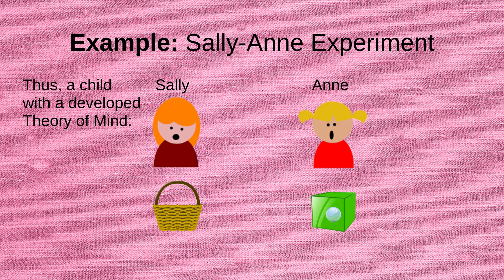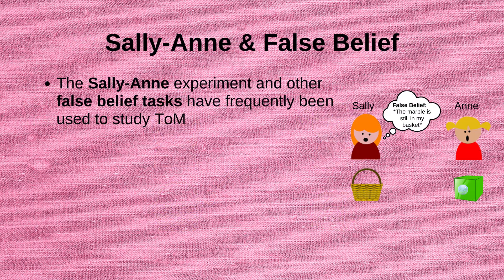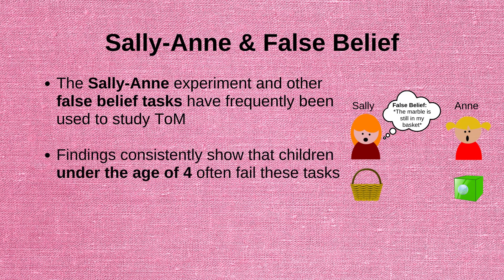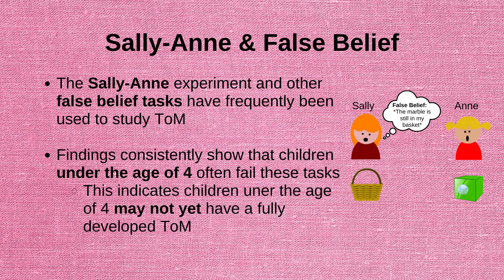Thus, a child with a developed theory of mind will accurately be able to predict that Sally will look for her marble in her basket. The Sally-Ann experiment and other false belief tasks have been used in many studies and have consistently found that children below the age of four often fail these tasks. These findings indicate that kids under the age of four may struggle with distinguishing between the knowledge that they possess and the lack of knowledge that others may have, indicating that theory of mind is not yet fully developed as they seem to struggle with attributing and inferring the mental states of others.